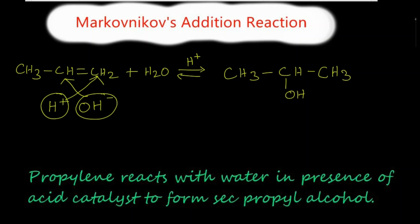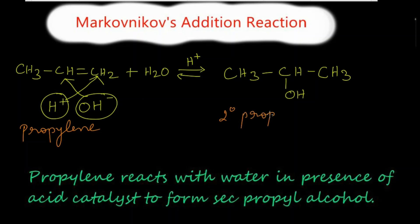We get this alcohol. This alcohol is known as secondary propyl alcohol. Propylene reacts with water in the presence of an acid catalyst to form secondary propyl alcohol.